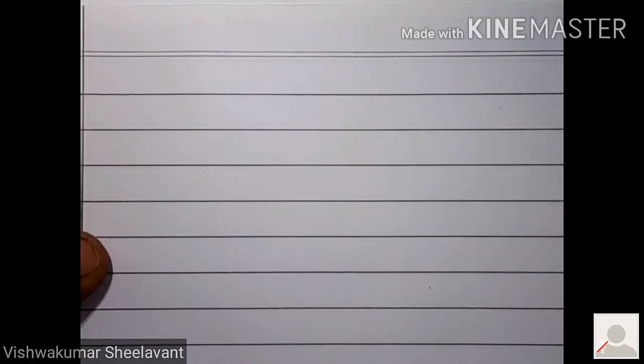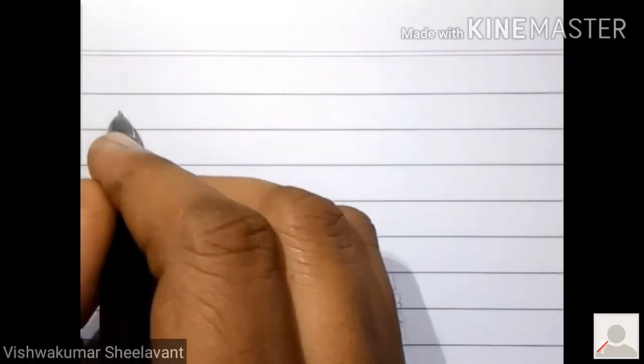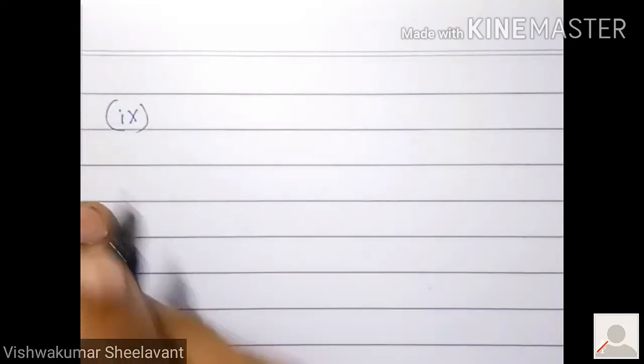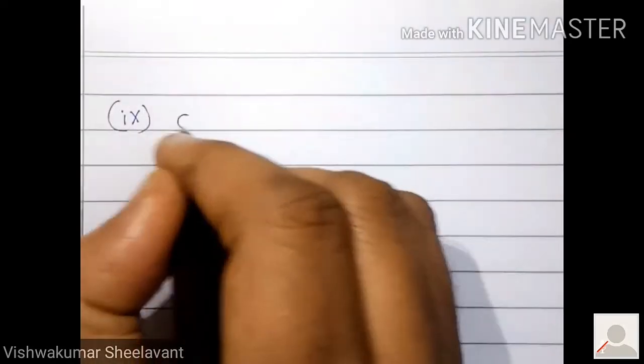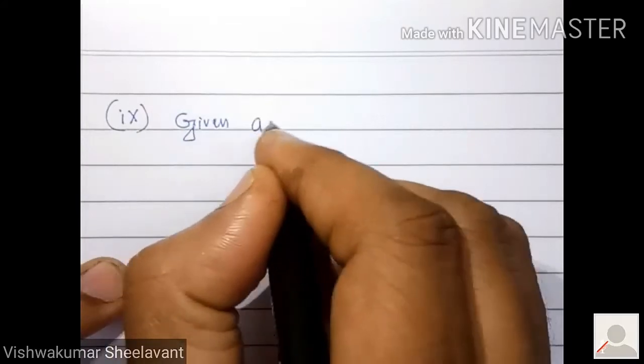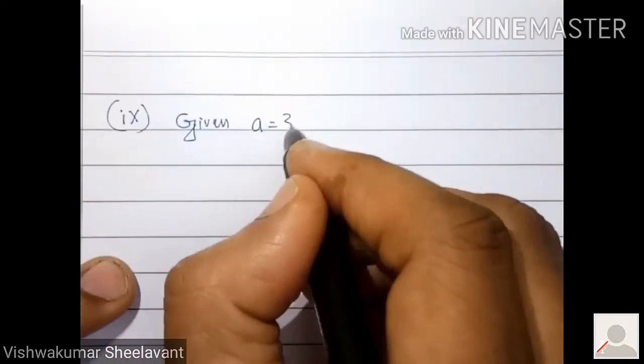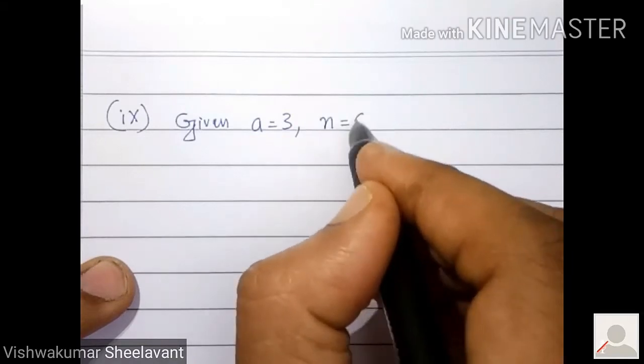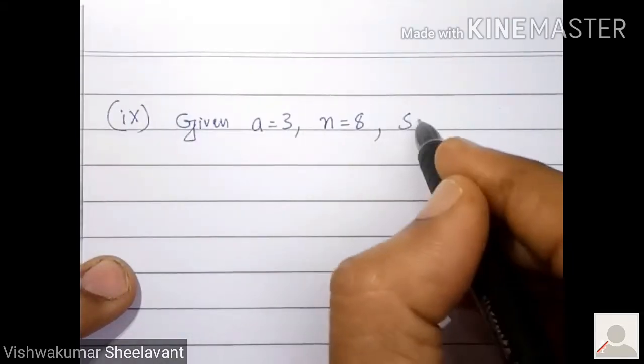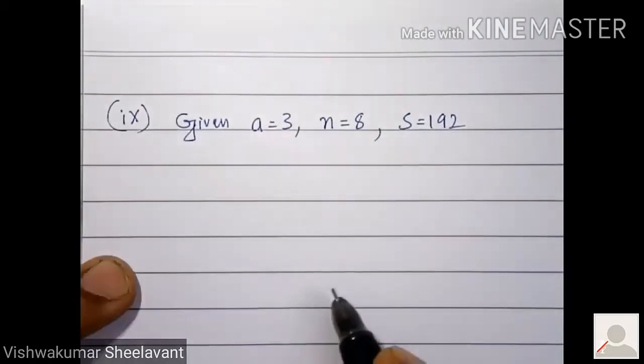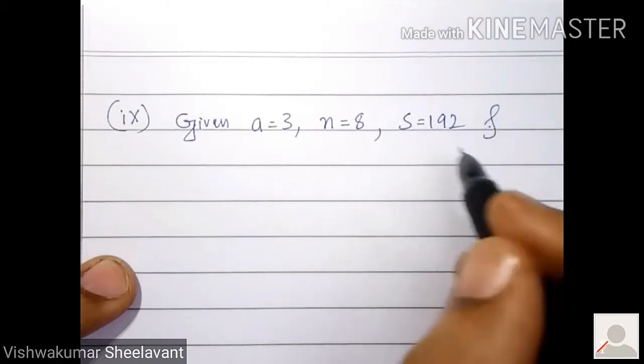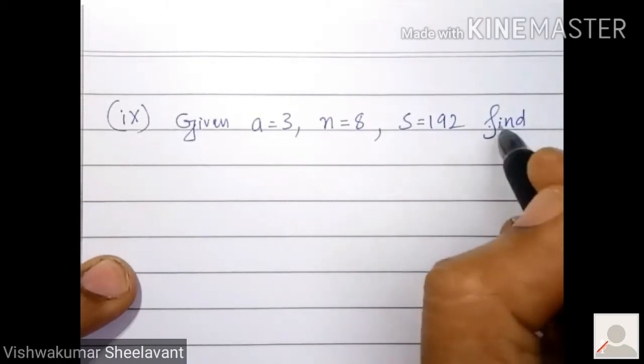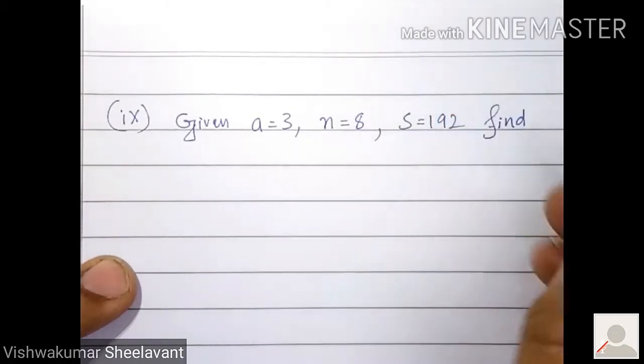Next we will take the 9th question. Given a equals 3, n equals 8, S equals 192, find d.